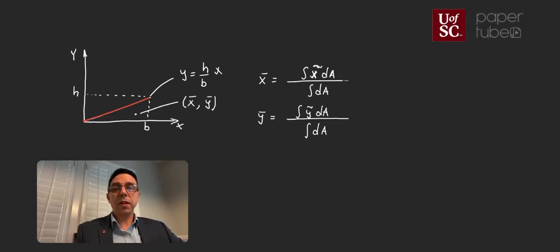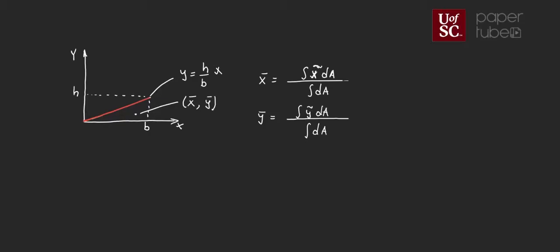To proceed, the first thing I need to do is define my differential of area dA — this is one of the key parts of this type of problem. I'll use two differential areas: one for X̄ and another for Ȳ, which makes the calculations a little easier. For the first dA, a particular point on it will have coordinates (x̃, ỹ), which is the centroid of that differential area.